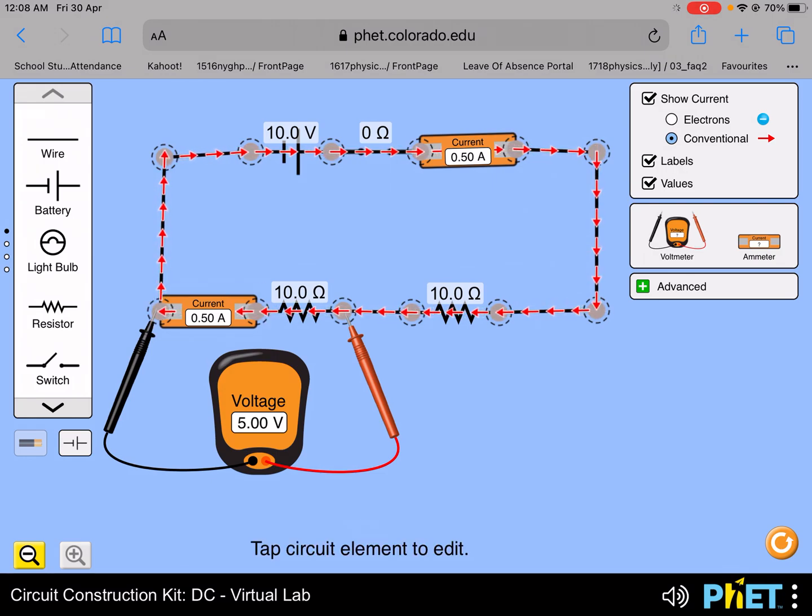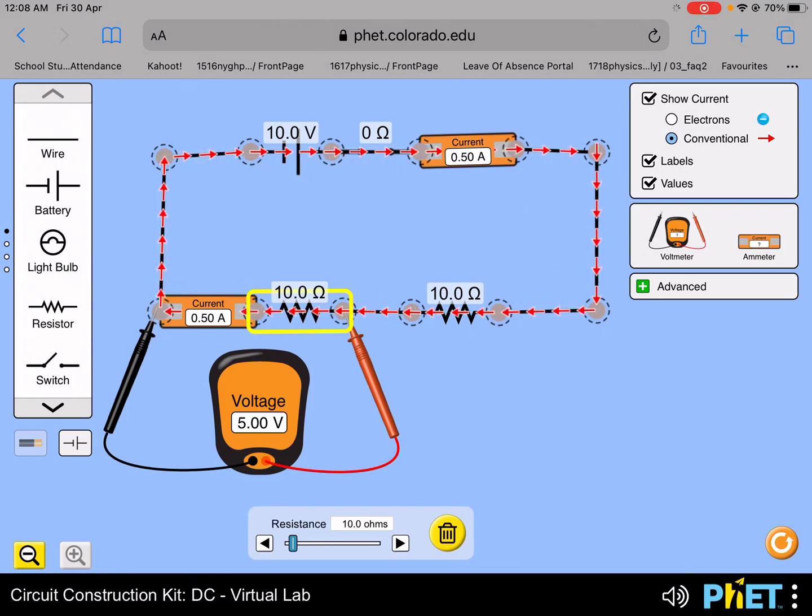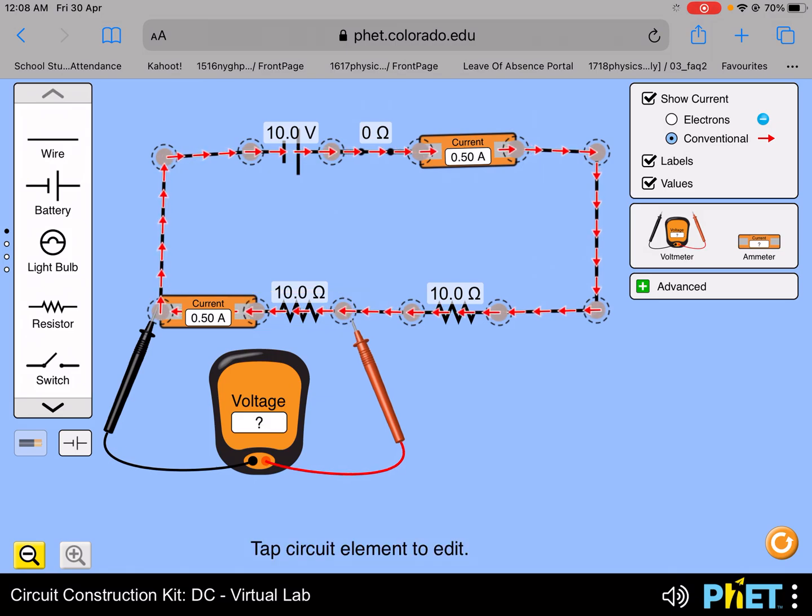Observe how it changes as I increase the rheostat resistance. At the same time, observe carefully the potential difference across the 10 ohm resistance as shown on the voltmeter.